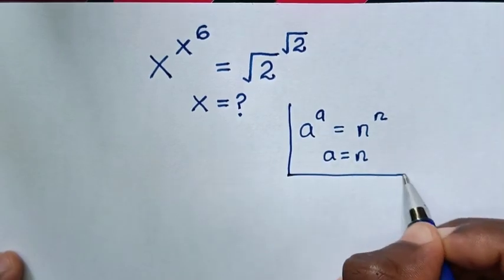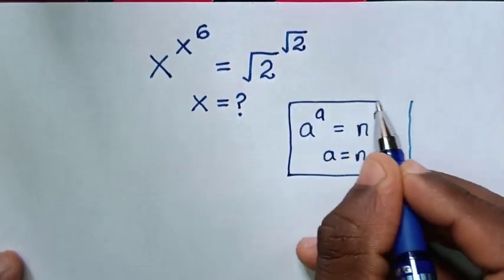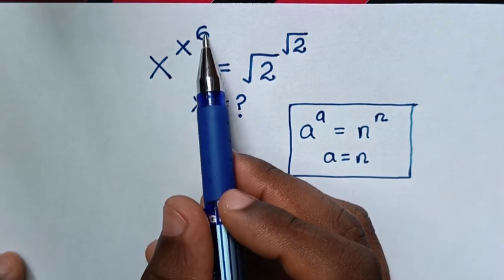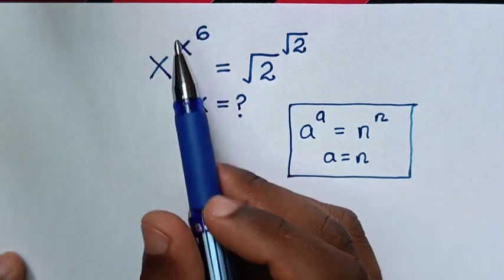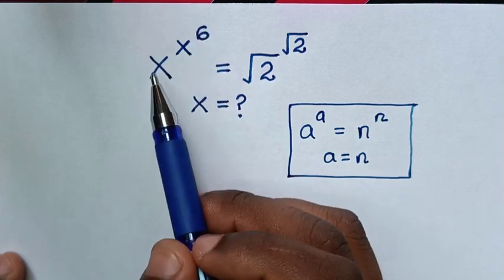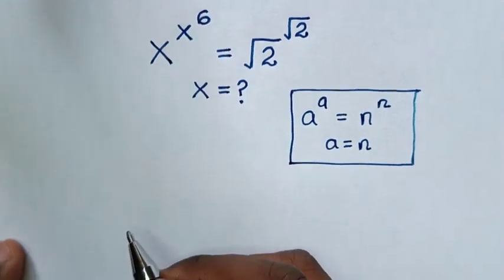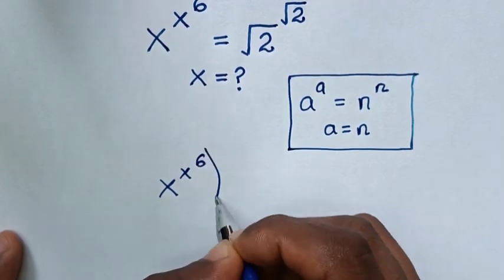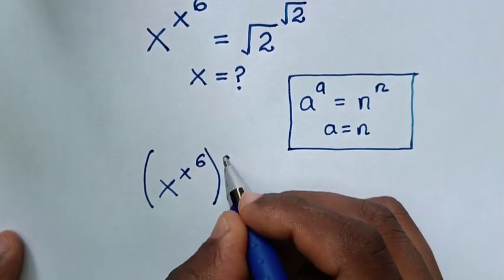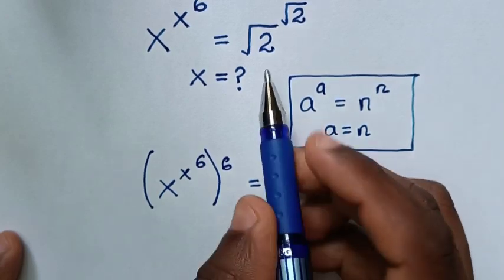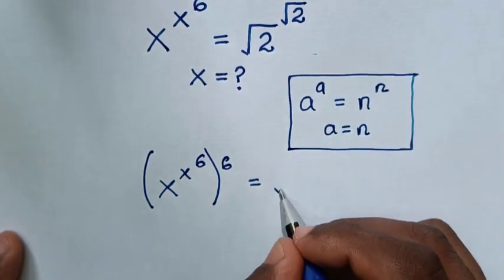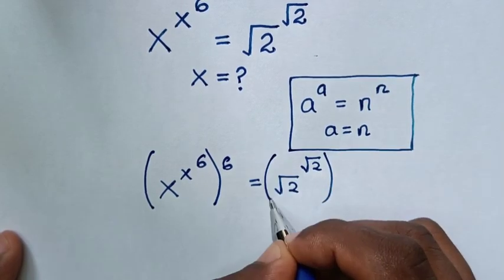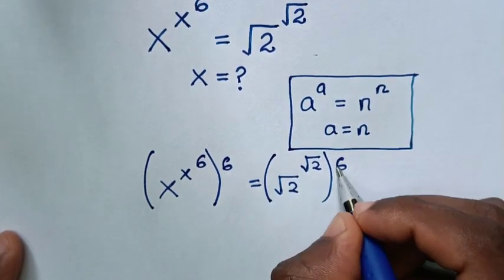So we will apply this rule into our equation. From our problem, x power of x power of 6 will make same base with same power. So we will multiply by power of 6 on both sides. Then our equation will be x power of x power of 6, bracket, multiplied by power of 6, is equal to square root of 2 power of square root of 2, bracket, multiplied by power of 6.